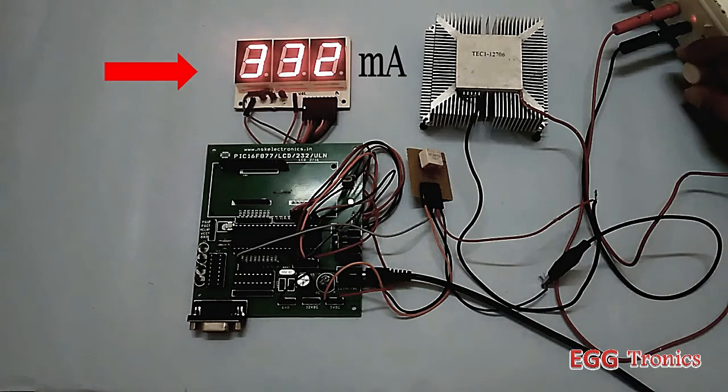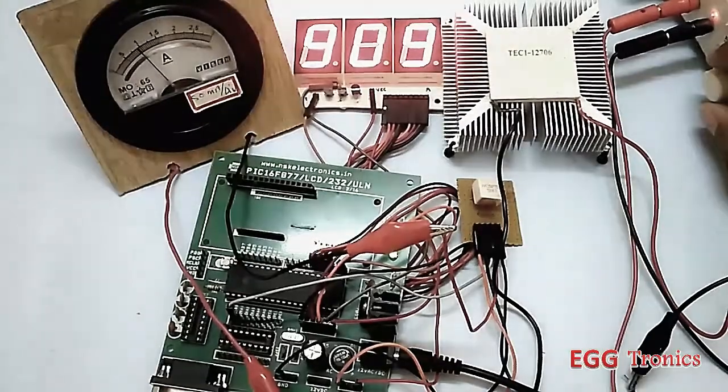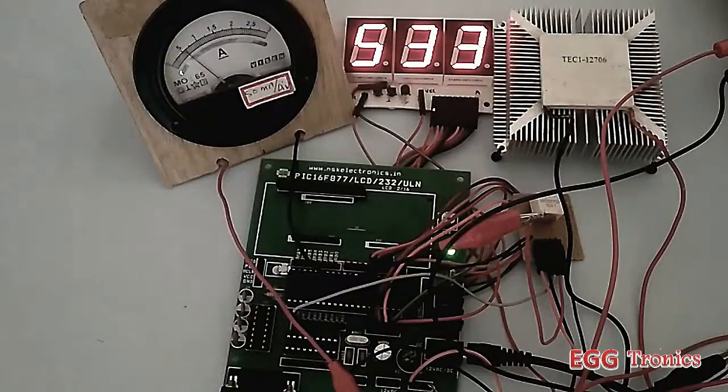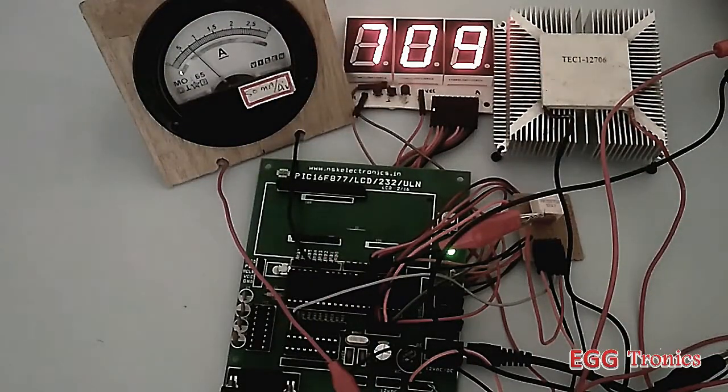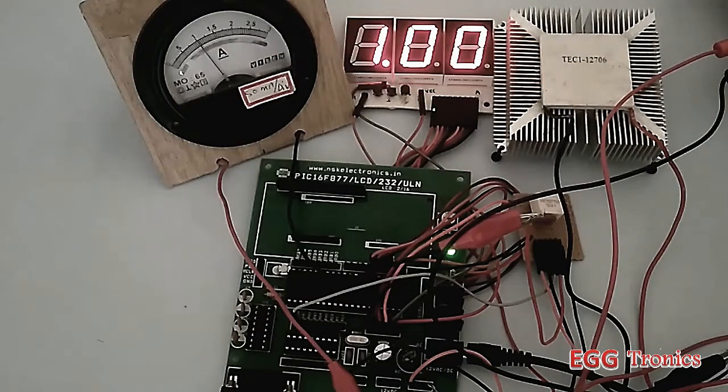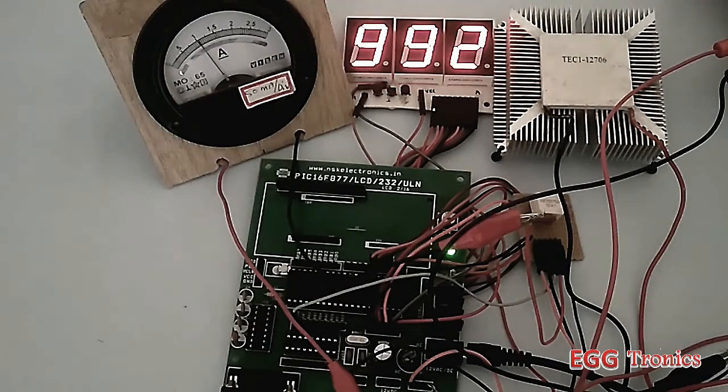And it looks like it is showing the proper current value in milliamps, but we have to be sure. So I connected my analog ammeter in series with the current sensor. It seems like our digital ammeter is working pretty accurately. As you can see, my analog ammeter and the display are showing almost exact same value.